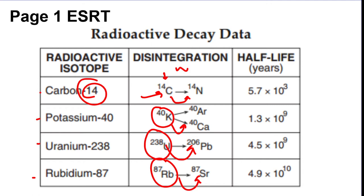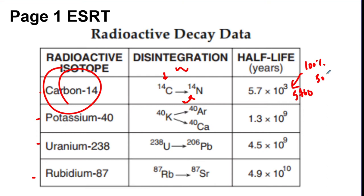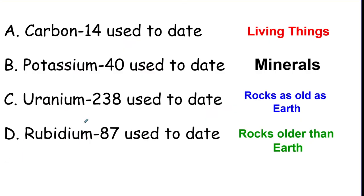We're going to focus on how to solve the problems. The half-life number is how many years it takes to cut half of the isotope into its product. If you start with 100 grams, it takes 5,700 years to end up with 50 grams of carbon-14. For anything that was once alive recently, use carbon-14. For minerals that are really old, use potassium-40, uranium-238, or rubidium-87.